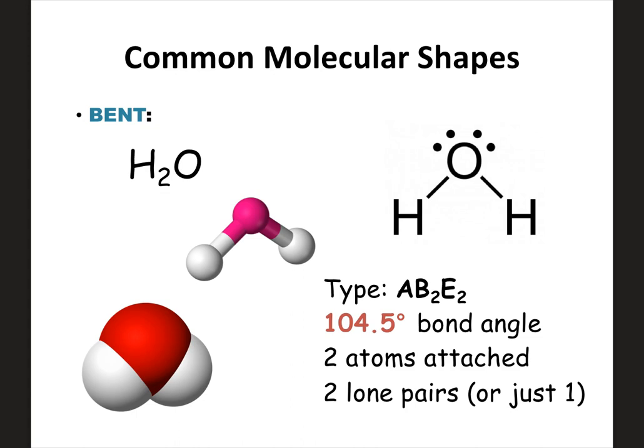Bent is a shape from Honors. It's when you have two things attached to the center with two lone pairs on the center, or a version where you have two things attached and just one lone pair on the center — both are bent. The bond angle for bent is about 104.5 degrees. AP allows a little wiggle room, but you should know it's around 104–105 degrees for a bent shape.